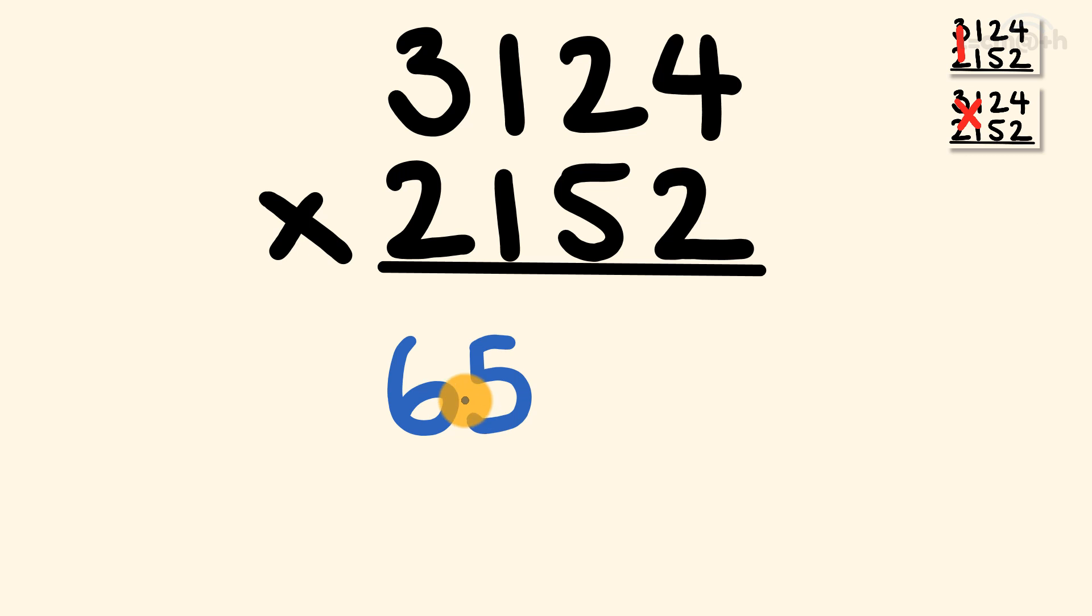To get the next digit, we're going to extend our cross multiplication pattern. We have 3 times 5, 2 times 2, and 1 times 1, and we add all these together. 3 times 5 is 15, 2 times 2 is 4, so we add that and we get 19, plus 1 is 20. And we write this in as follows.